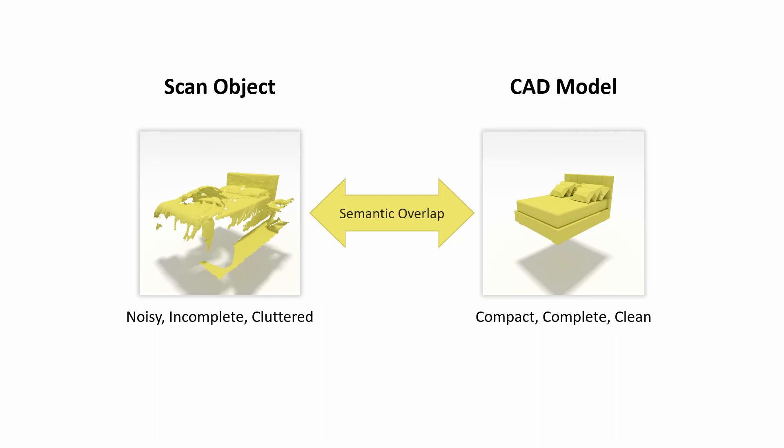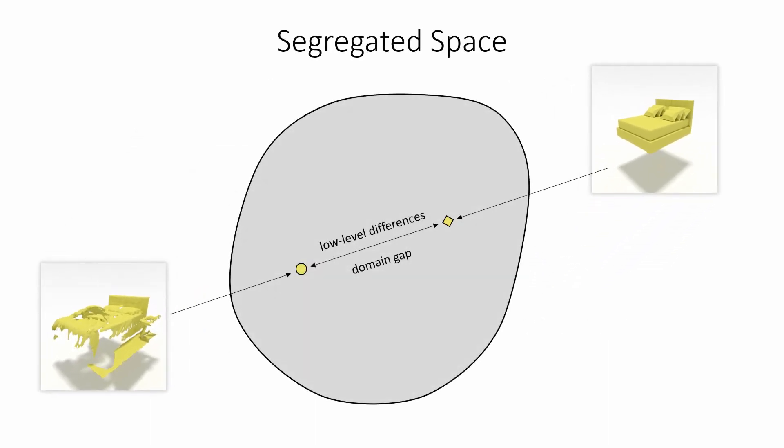Geometrically, they have strong lower-level differences. While scan objects can be noisy, incomplete, and cluttered, CAD models are mostly compact, clean, and complete. These differences make it difficult to map objects from both domains to the same space, where semantically similar objects lie close together.